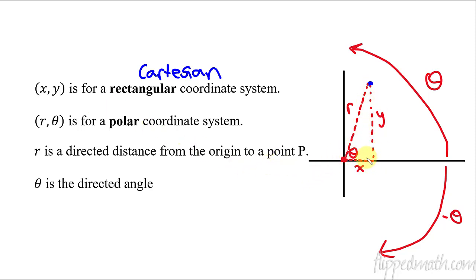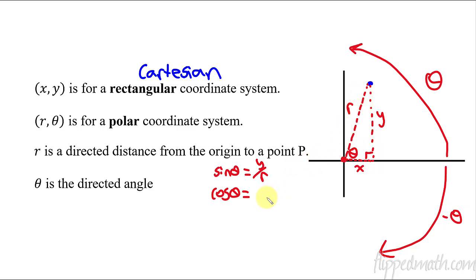The polar and rectangular systems interrelate based on a right triangle. Using the Pythagorean theorem: x² + y² = r². Using trig: sine θ equals opposite over hypotenuse, which is y over r — not y over x, because r is the hypotenuse. And cosine θ equals adjacent over hypotenuse, which is x over r. So r² = x² + y², and from that: y = r·sin θ, and x = r·cos θ.